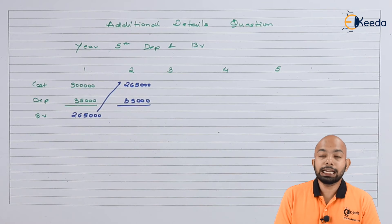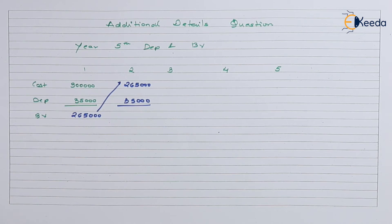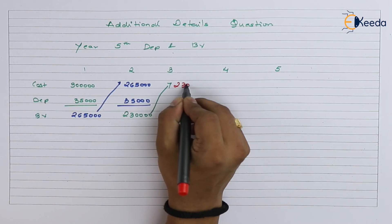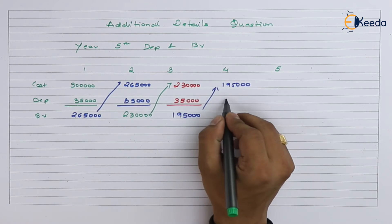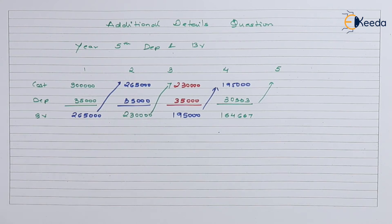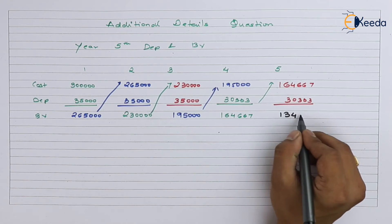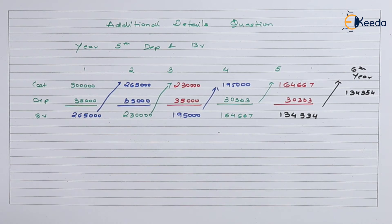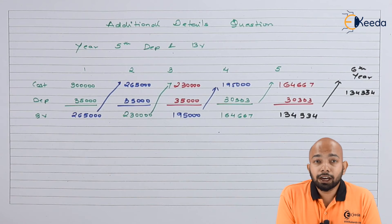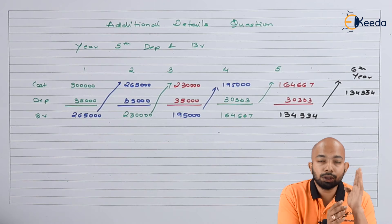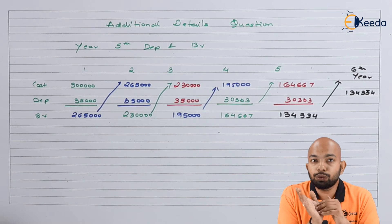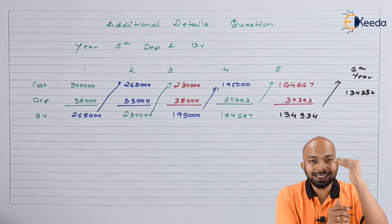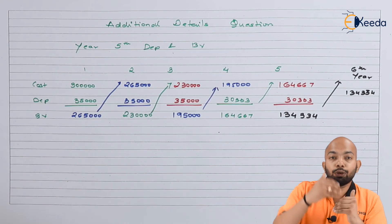For the additional details, we have segregated the calculation across 6 years. To find the 5th year figures, we must first calculate years 1 through 4. The page is split into cost, less depreciation, and closing book value, which becomes the opening balance of the next year.